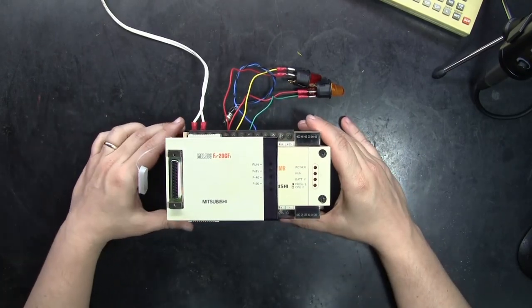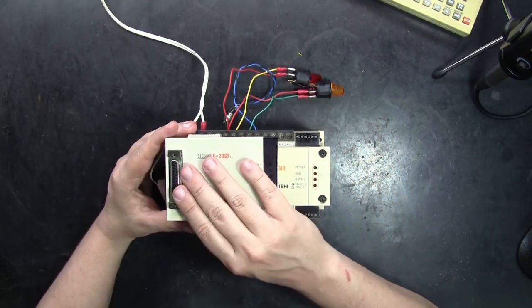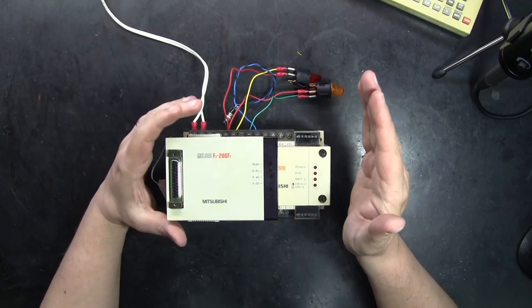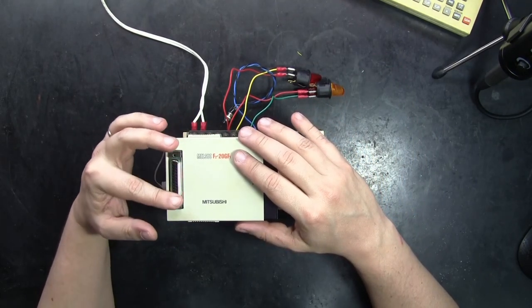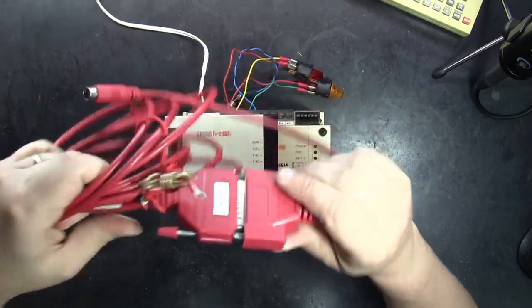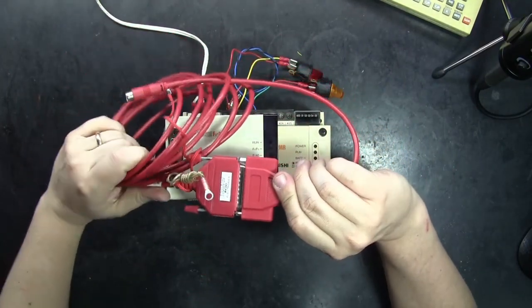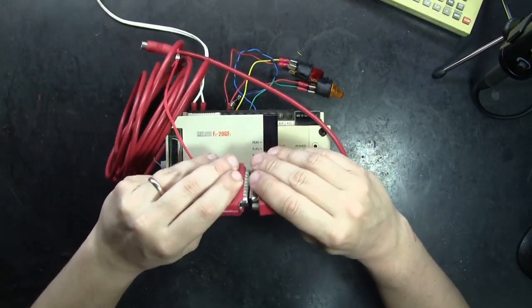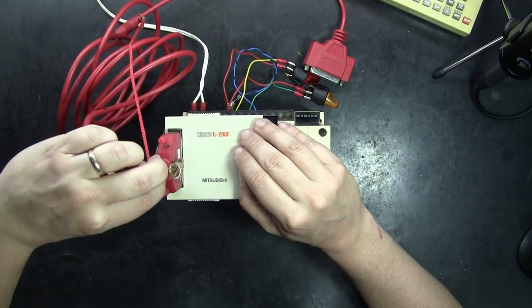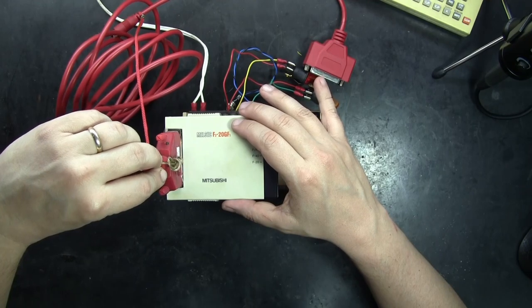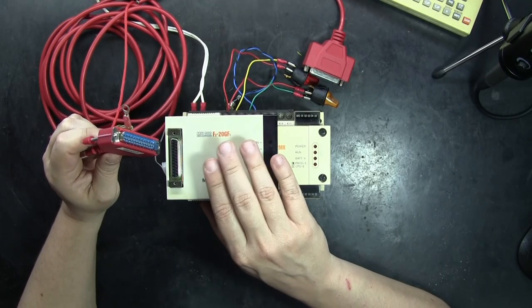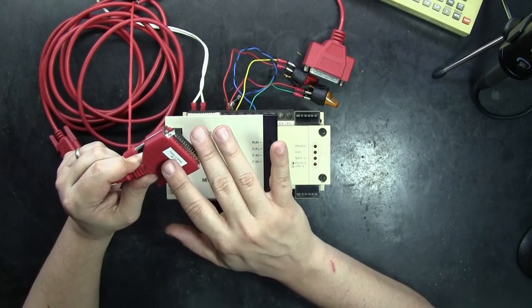After that, this RS422 port has the same pin configuration as the old A PLC and old FX PLC, the big ones like FX2, FX2C. It's the same port. Knowing about that, we can use a converter like this - this is SC09 made by Buyers. We have the option to use this port that's RS422 and we could plug it directly into this F220GF1 port.